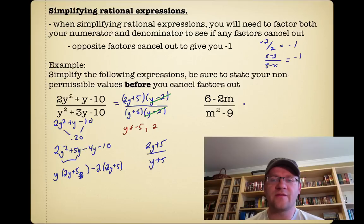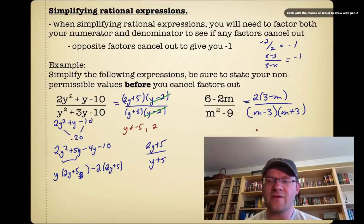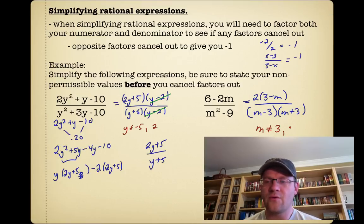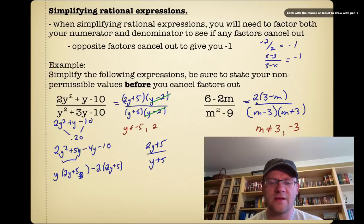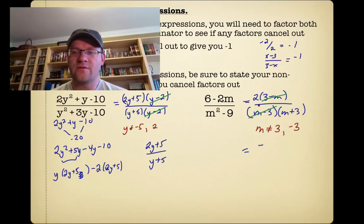Our second example is (6 minus 2m) over (m squared minus 9). I can take out a greatest common factor of 2 from the top, leaving 2(3 minus m). On the bottom, that factors as a difference of squares: (m minus 3)(m plus 3). The non-permissible values are m cannot equal 3 or negative 3. Now, 3 minus m and m minus 3 are opposite expressions — same terms but with opposite signs — so they cancel to give negative 1. That leaves negative 2 over (m plus 3).